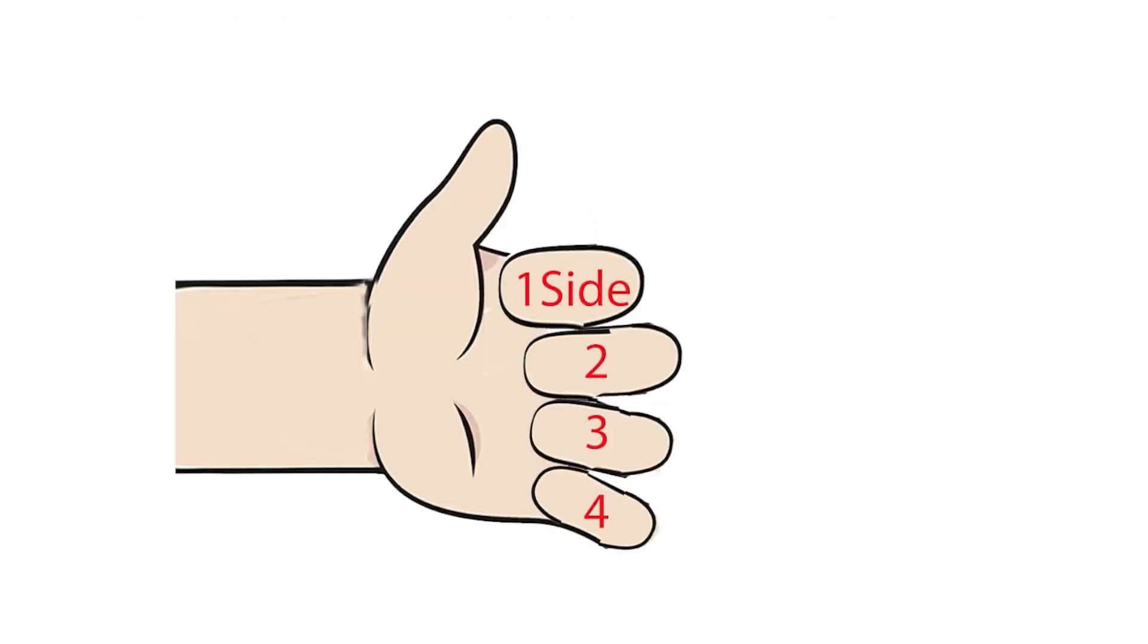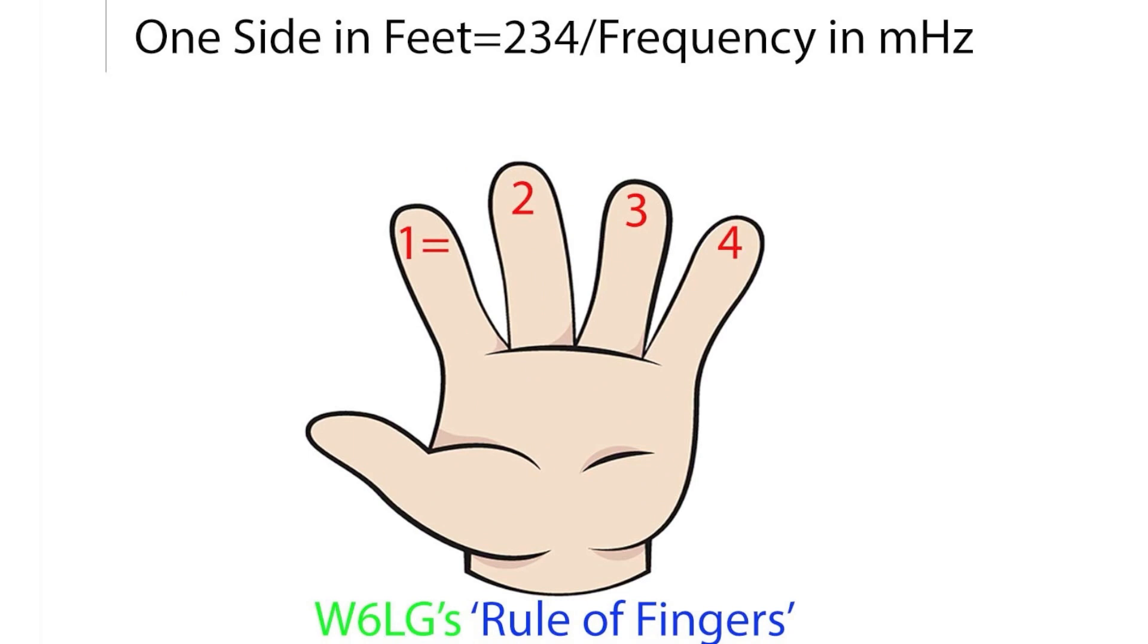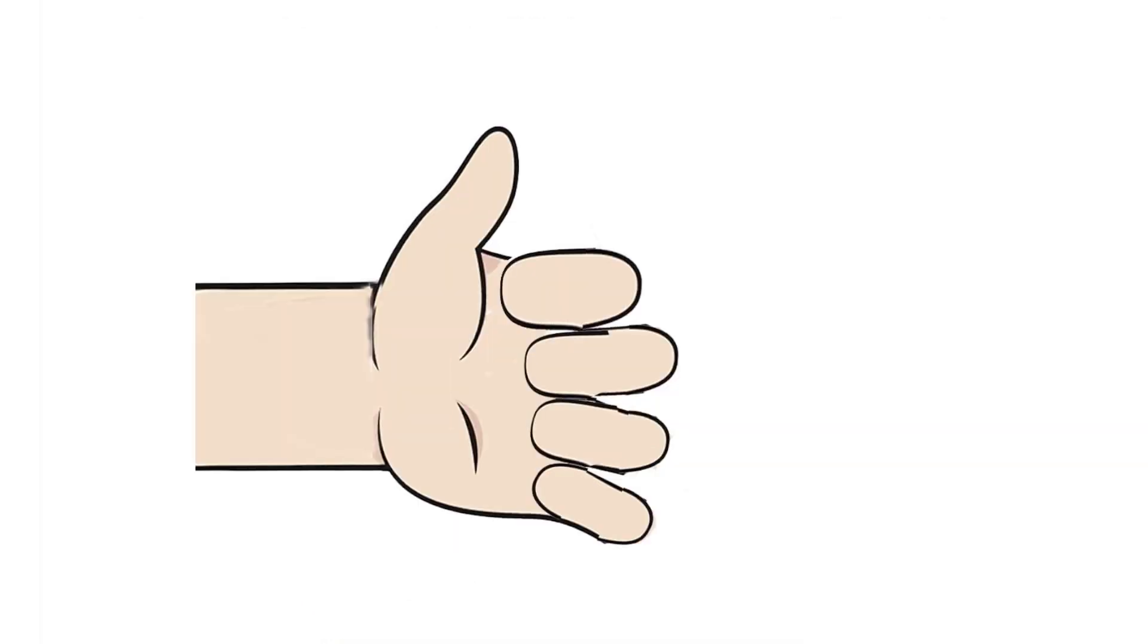So, there you go, thumbs up. One side equals 234 divided by the frequency in megahertz. One equals 2, 3, 4. One side equals 234 divided by the frequency in megahertz. It's just that simple.